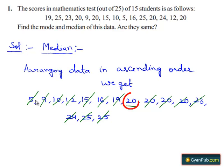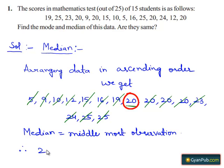Here 20 is the middlemost observation. Median is equal to middlemost observation. Therefore, 20 is the median.